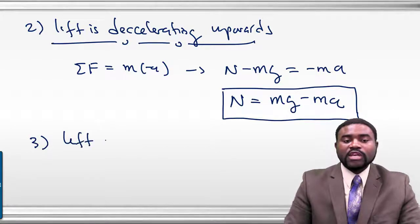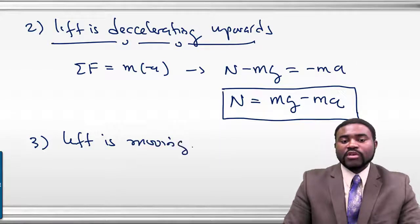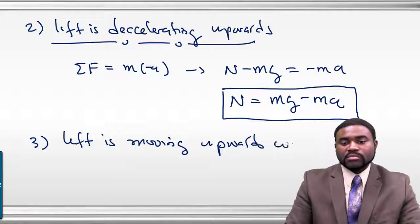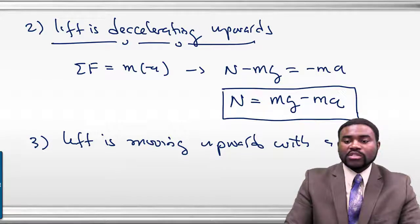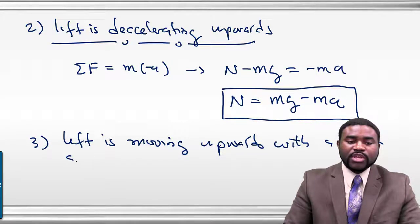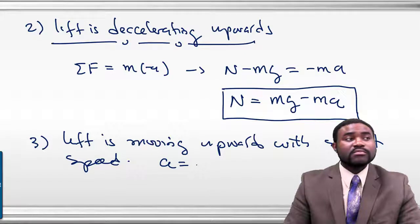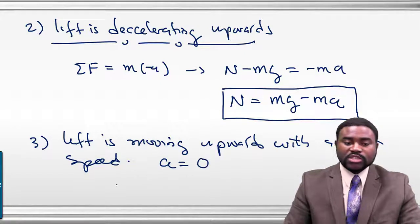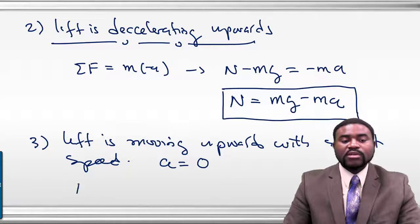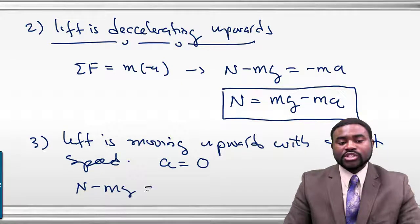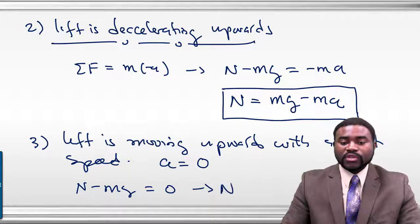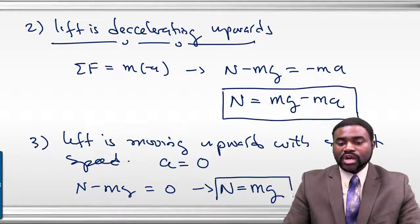Case three: the lift is moving upwards with a constant speed. What is the acceleration? Zero. The acceleration is zero, which means N minus MG will be equal to zero. Therefore, the normal force N is equal to your actual weight MG — you feel exactly your normal weight.